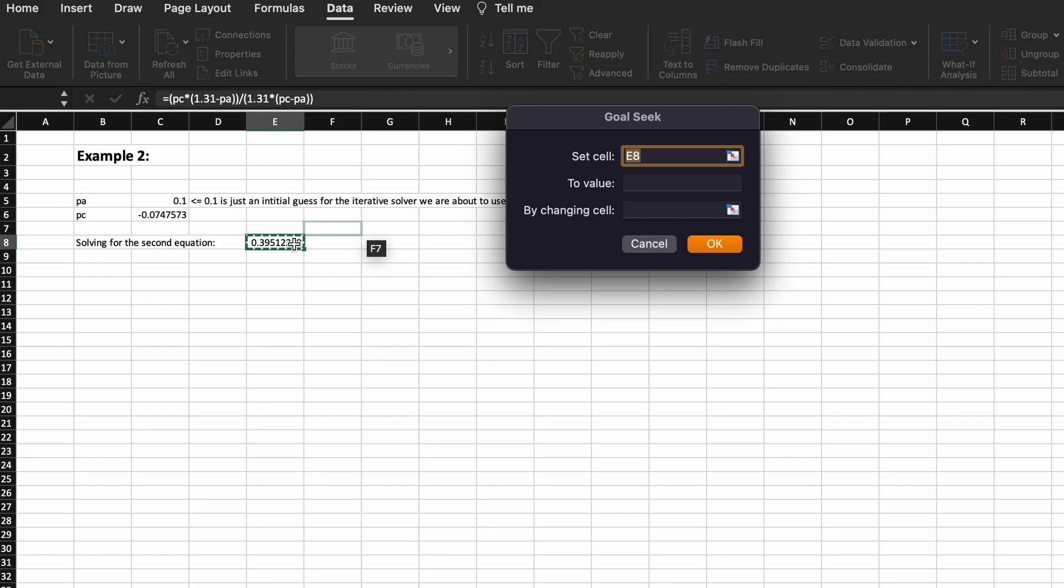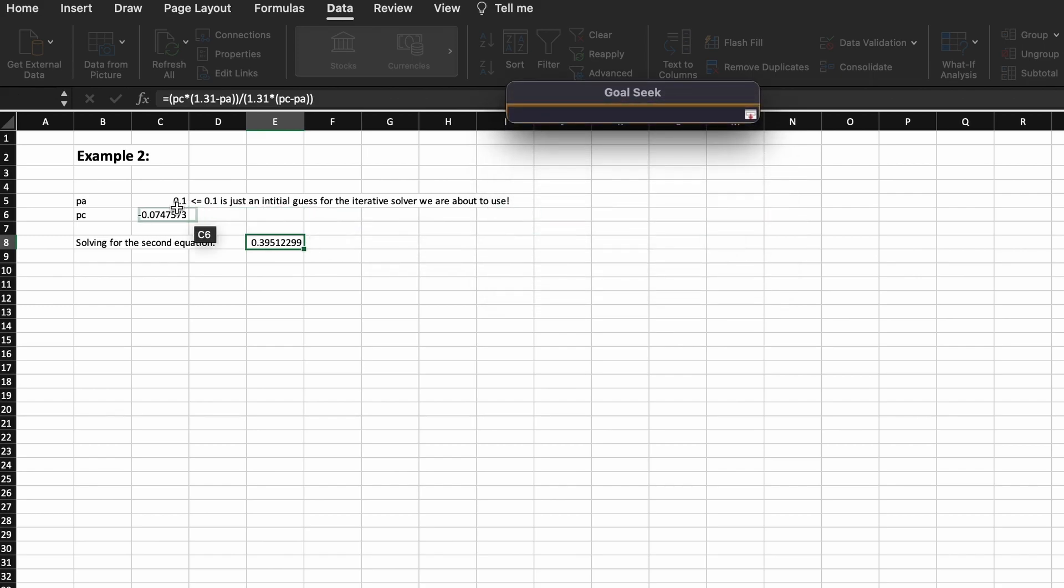Our set cell is the cell that we want to force to a certain value. So this is the cell where we just entered in our second equation, or the right hand side of our second equation. Then we want to set this to a value of 0.28 and we want to allow Excel to change the PA cell to allow us to get our 0.28 crystalline percentage.